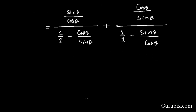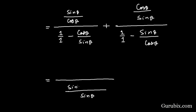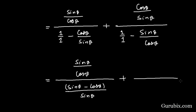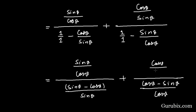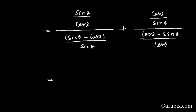Now we shall take LCM in the denominator of these values. The LCM in the denominator of the first term gives sin θ, and the denominator becomes sin θ minus cos θ, with numerator sin θ over cos θ. Similarly, taking LCM in the second term gives cos θ in the denominator, making it cos θ minus sin θ, with numerator cos θ over sin θ.